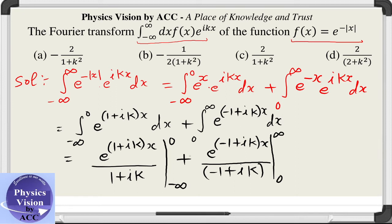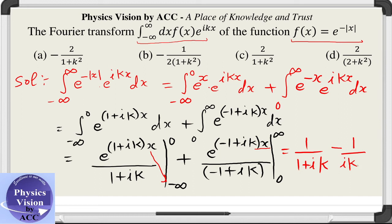Now substituting the limits: the first integral gives e raised to the power 0, which is 1, minus the value at minus infinity which vanishes, yielding 1 divided by (1 + iota k). For the second term, at x approaching infinity the exponential vanishes, and at x equal to 0 it becomes 1. So this gives 0 minus 1, which is minus 1 divided by (iota k minus 1).